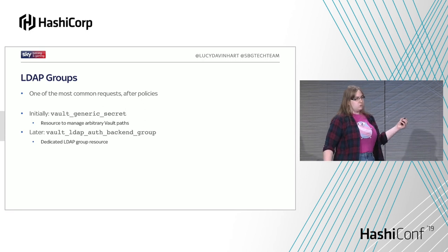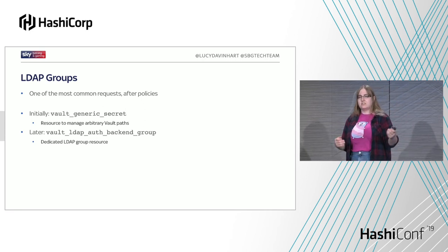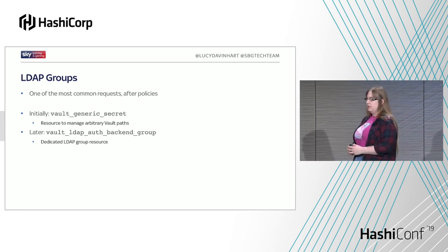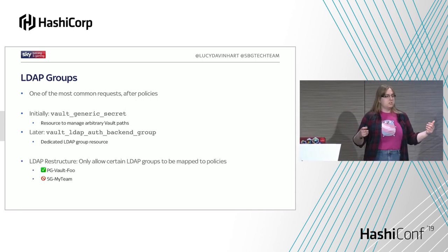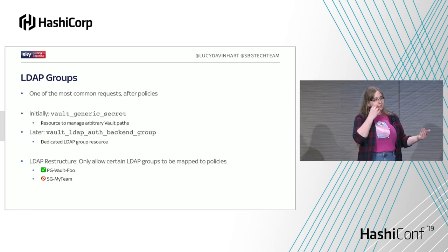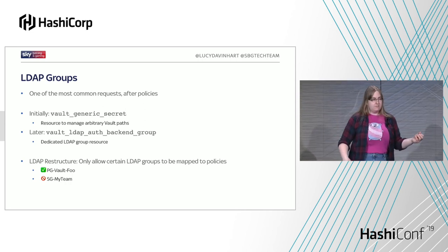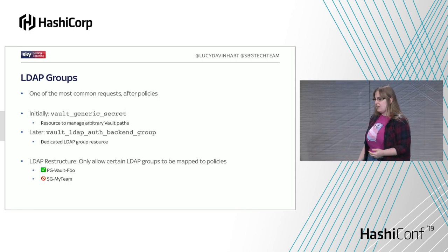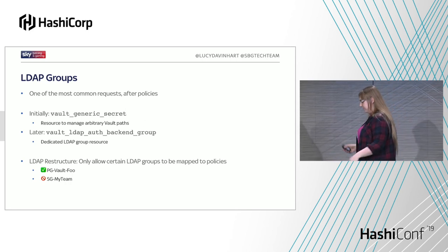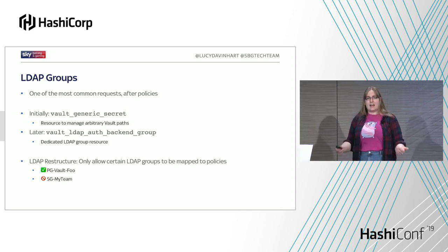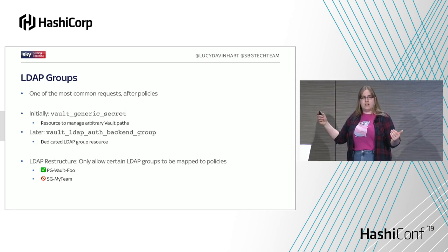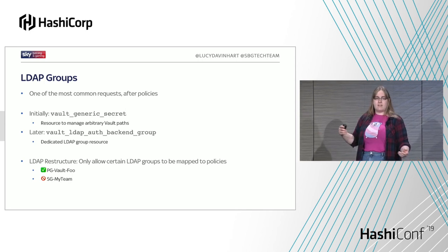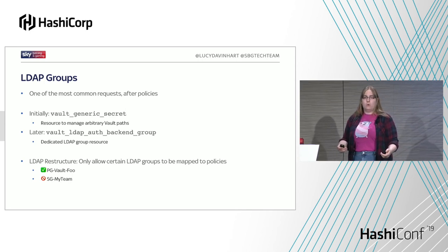Because our users weren't writing raw Terraform code, this switch was completely invisible to them — they didn't have to do anything different. Also with LDAP groups, there was a change at our place where certain types of LDAP groups aren't allowed to be mapped to permissions within systems such as Vault. That confused a lot of our users for a while, and we ended up getting pull requests for the wrong kind of LDAP group. Fortunately, it's very easy to detect, so we now have something in our pipeline that can mark the pull request as failed and give them an explanation — so we don't have to explain it to them manually.